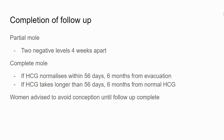With follow-up, assuming declining beta-HCG levels, follow-up will be considered complete for a partial mole when you've got two negative levels taken four weeks apart. For a complete mole, which carries slightly higher risk, if the HCG normalises within 56 days, follow-up is considered complete six months from evacuation. If the HCG takes longer than 56 days to normalise, follow-up is considered complete six months from that normalisation. It's important to advise women to avoid conception until follow-up is complete, as this is an important time to detect any recurrence.